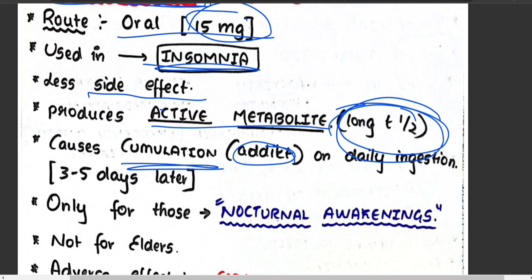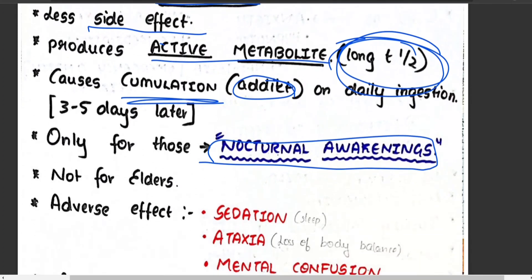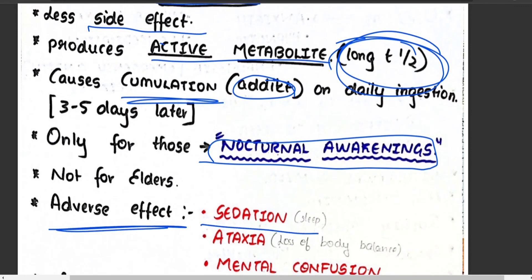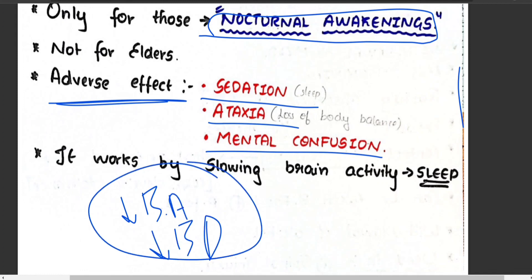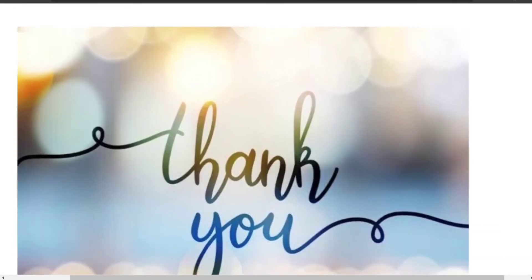Because of accumulation risk, flurazepam should not be taken every day. It is prescribed specifically for patients with nocturnal awakeness — those who sleep during the day and wake at night — and is not recommended for elderly patients. Adverse effects: sedation, ataxia (loss of body balance), and mental confusion. It works by slowing brain activity, decreasing neurotransmitter release, and inducing sleep.